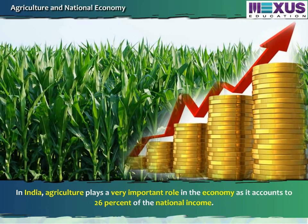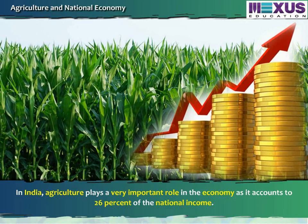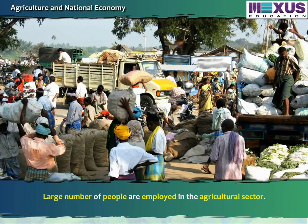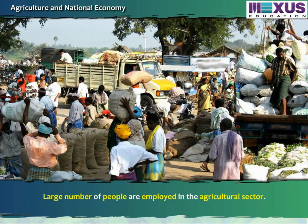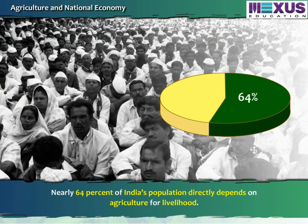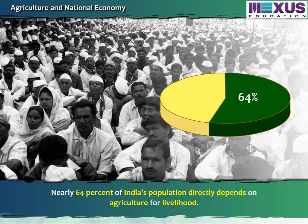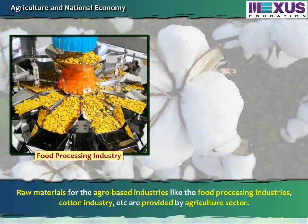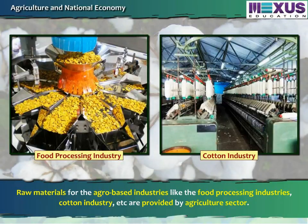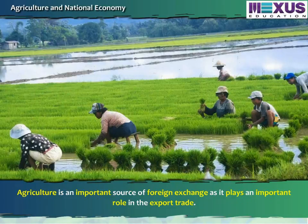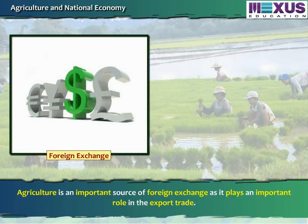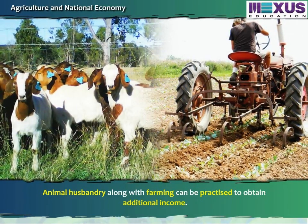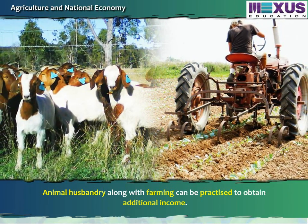In India, agriculture plays a very important role in the economy as it accounts for 26% of the national income. A large number of people are employed in the agricultural sector — nearly 64% of India's population directly depends on agriculture for livelihood. Raw materials for agro-based industries like food processing industries, cotton industry, etc. are provided by the agriculture sector. Agriculture is also an important source of foreign exchange as it plays an important role in export trade. Animal husbandry along with farming can be practiced to obtain additional income.